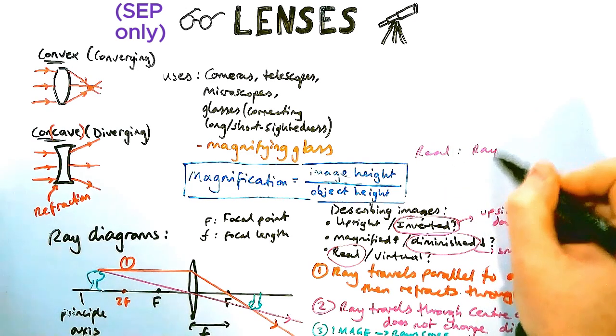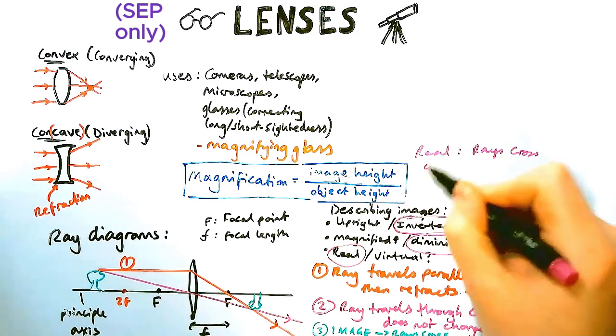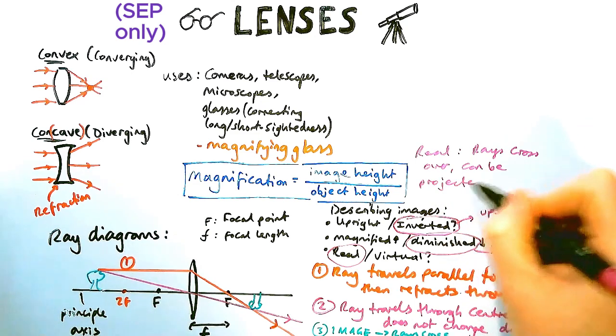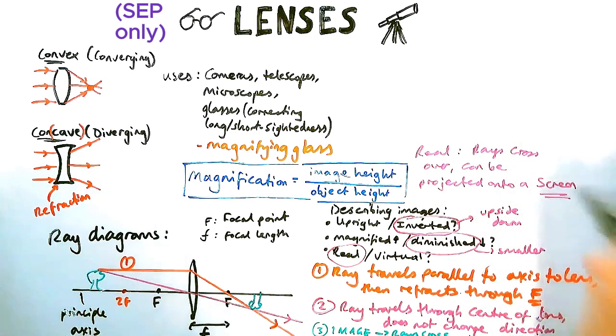So let's define what a real image means. So a real image is where the rays cross over, so the two rays of light I drew actually crossed over, and the image can be projected onto a screen. Like in a cinema projector, or in the back of your eye, the rays are actually there.